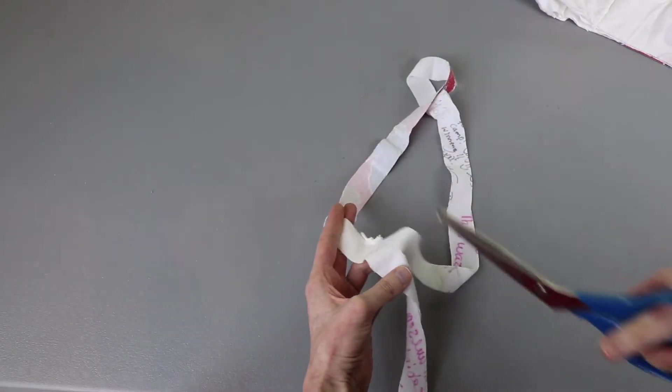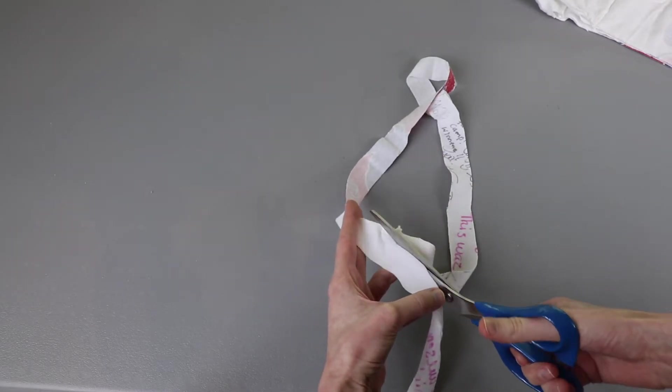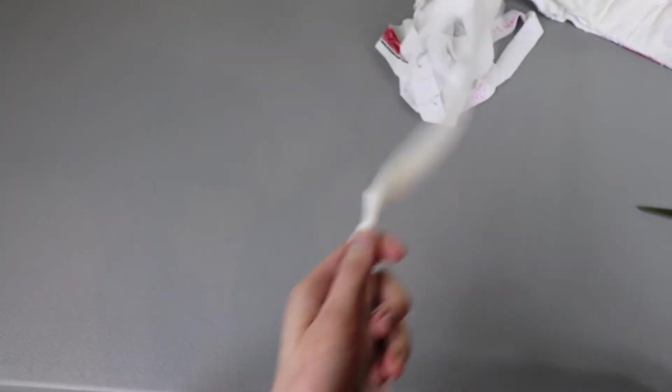And then for our last loop we're just going to cut from this to this outside edge. And now we have one long strand of t-shirt.